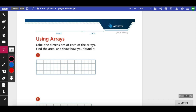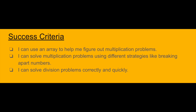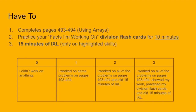Now let's take a look at the success criteria for what you should be able to accomplish by watching this video and doing your work today. By the end of this video and completing your assignment, you should be able to say: I can use an array to help me figure out multiplication problems, I can solve multiplication problems using different strategies like breaking apart numbers, and I can solve division problems quickly and correctly. For today you need to complete pages 493 to 494, practice your division flashcards for 10 minutes, and do 15 minutes of IXL on highlighted skills only.